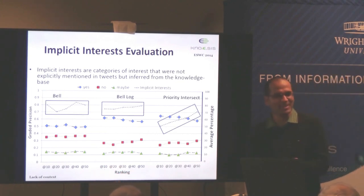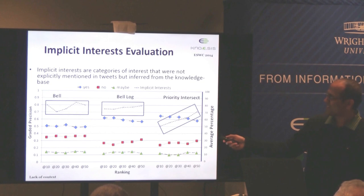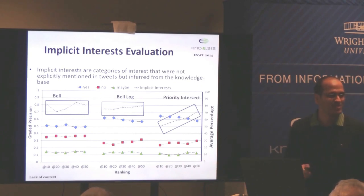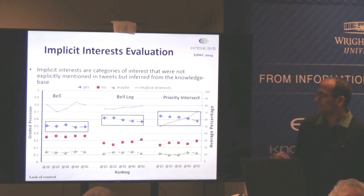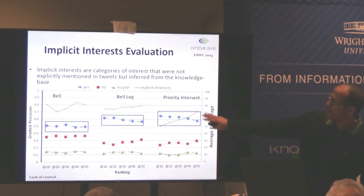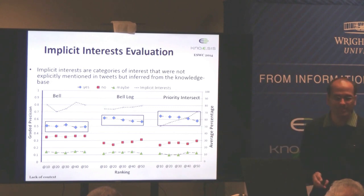The black line shows the percentage of implicit interests at top-N — how many interests were not mentioned in user tweets. The blue dots show how many of those are relevant to users. At top 50, more than 70% of the interests captured by Priority Intersect were not mentioned in user tweets, with a precision for relevancy of 60%.